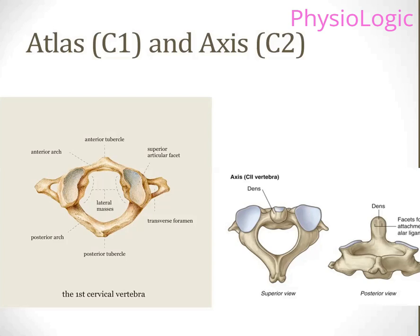Which structure is enclosing this central canal? You can see the anterior tubercle in the atlas, and there is the posterior tubercle and the transverse foramen — you can see there is a passage. In the area labeled lateral masses in the first cervical vertebra, you can see it is surrounded by the anterior arch, the superior articular facet, the lateral mass, and the transverse foramen. We are not studying the full anatomy of the cervical spine; we are just tracing the passage of the spinal cord so that in a clinical setting, when we see a patient with spinal cord symptoms, we understand where it is located.